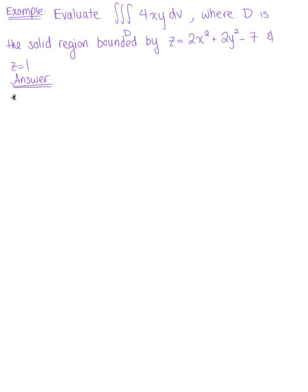We want to start by considering the solid region d in three dimensions. Looking at what we're given, we know that it's bounded by this paraboloid, z equal to 2x squared plus 2y squared minus 7, and this plane, z equal to 1. So the paraboloid is going to be the lower bound, and the plane is our upper bound.